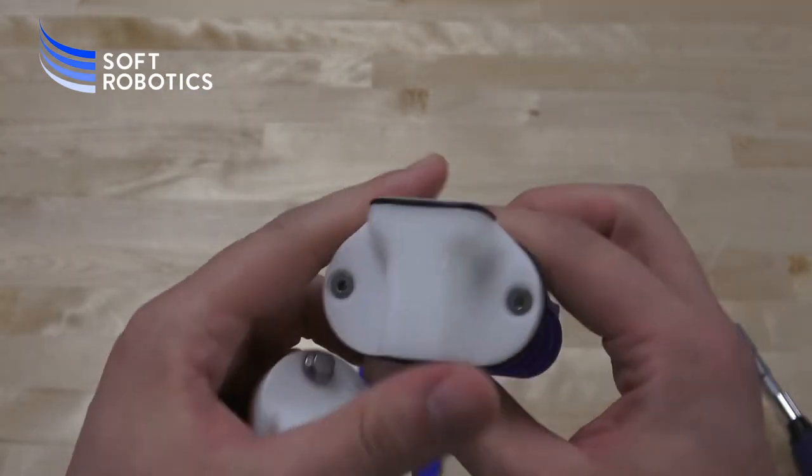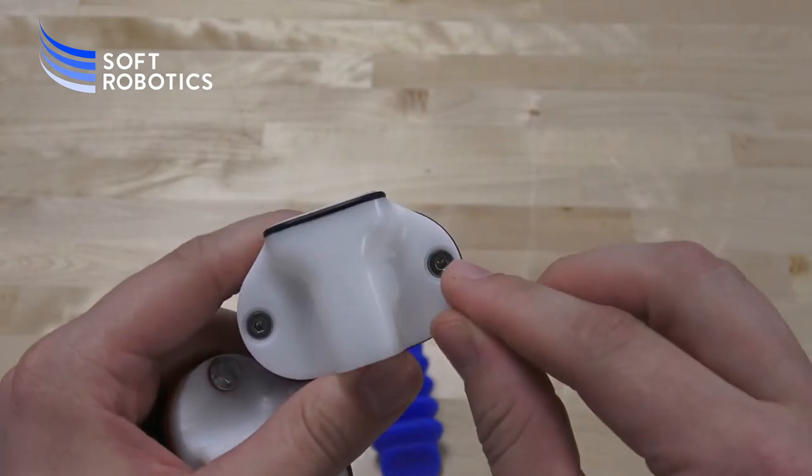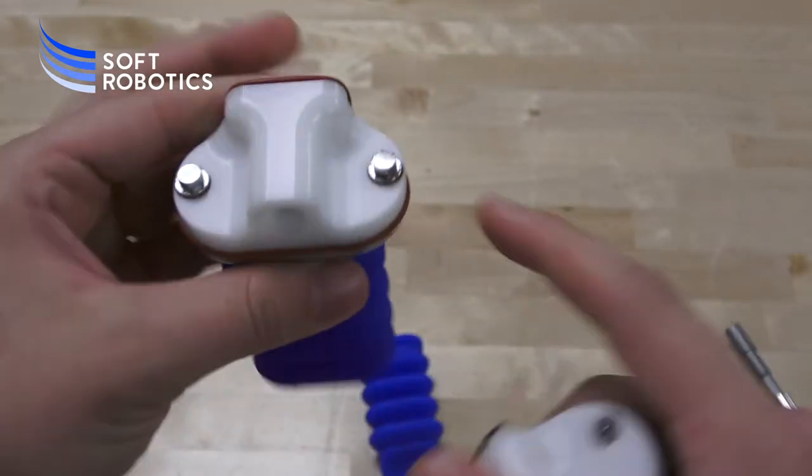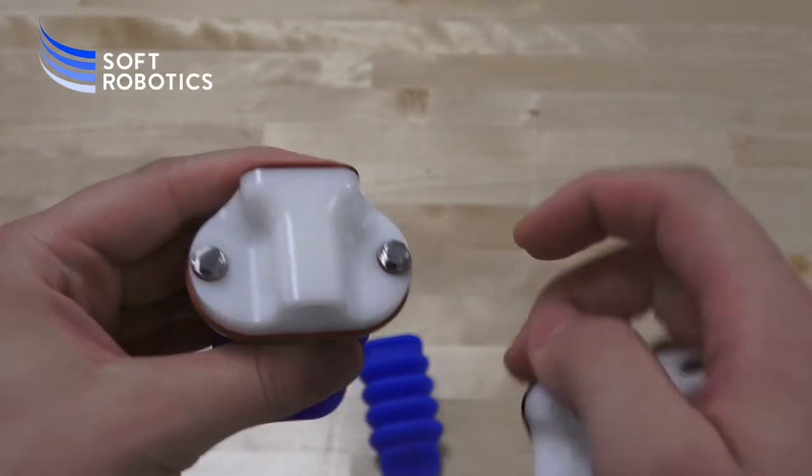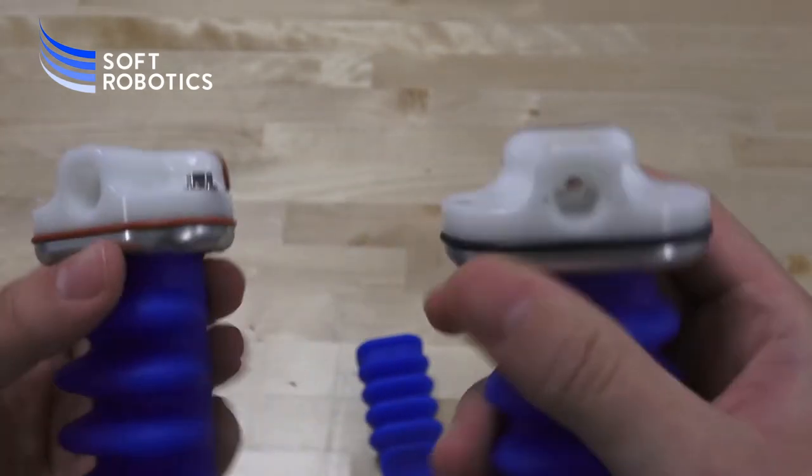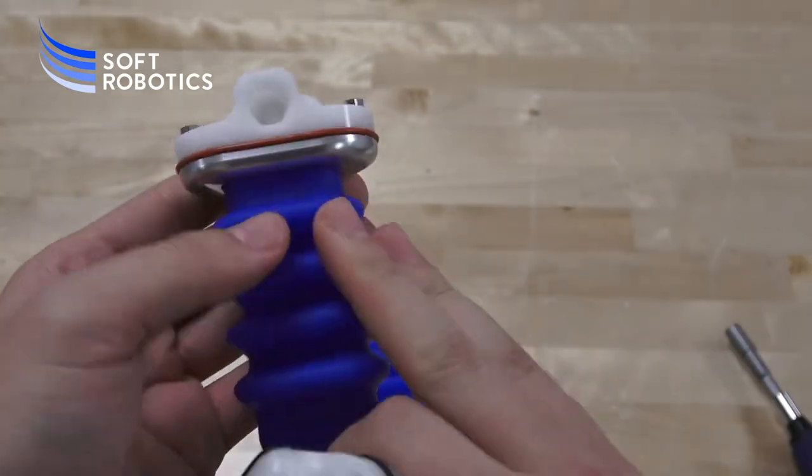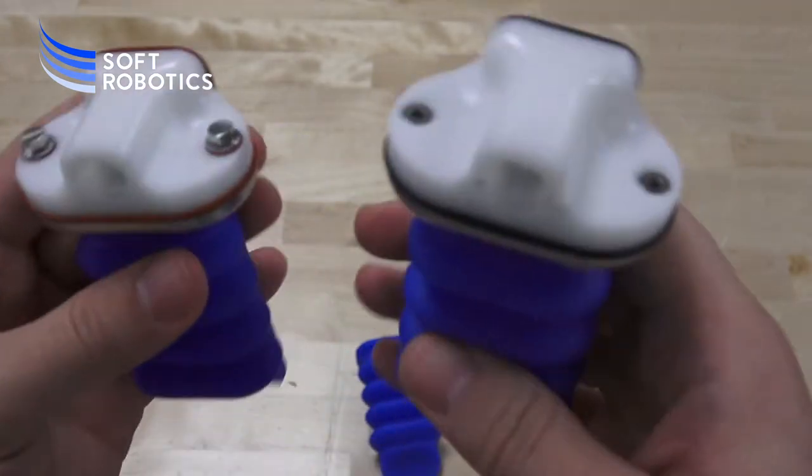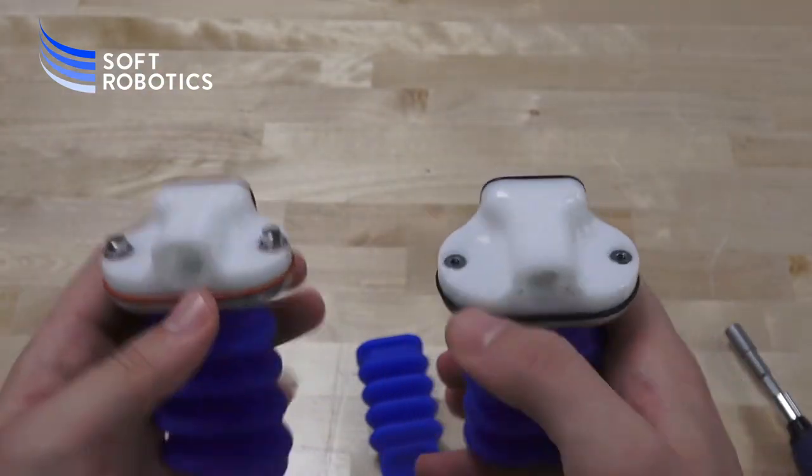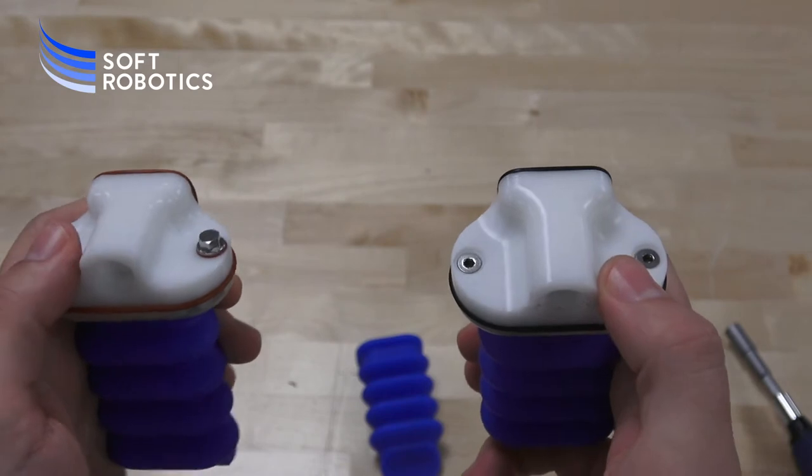So the industrial version has a 2.5 millimeter Allen key hex, and then the food safe version has a raised 6 millimeter hex nut on top. For the purpose of this demonstration, I'm going to be showing you the food safe version, but they are identical in how to replace them. It's just the tool that you need to remove these screws.